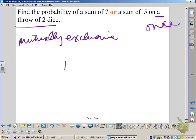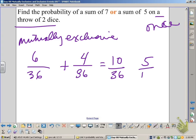If you have finished the problem and you're watching the answer, the answer is about to appear. So we're going to be adding. And the probability of rolling a sum of seven is six out of thirty-six. And a sum of five is four out of thirty-six. So when we add those together, we get a total of ten out of thirty-six. And the answer is five out of eighteen.